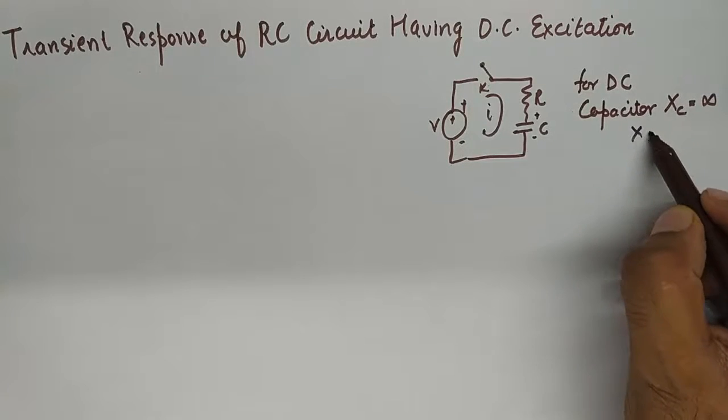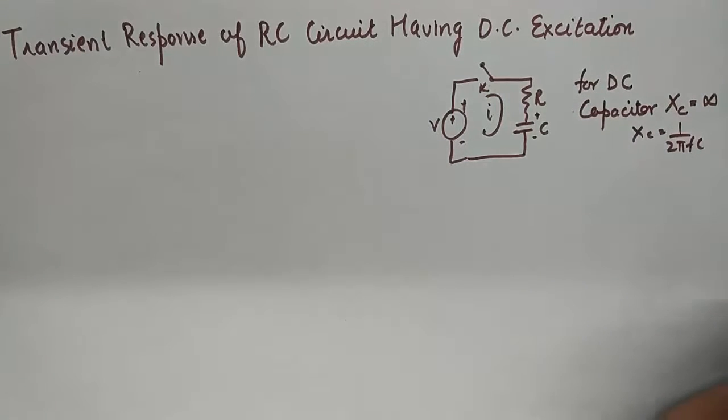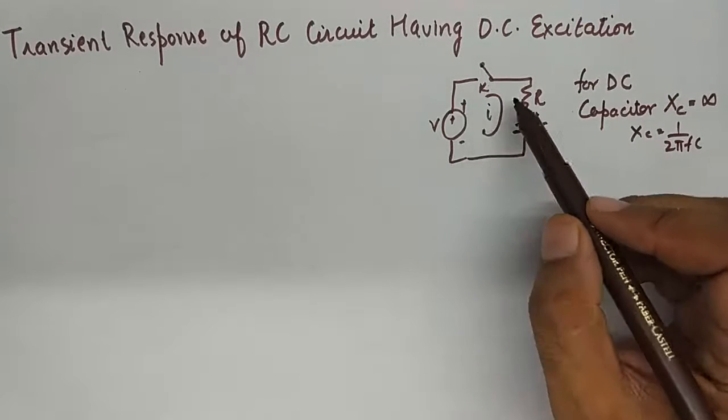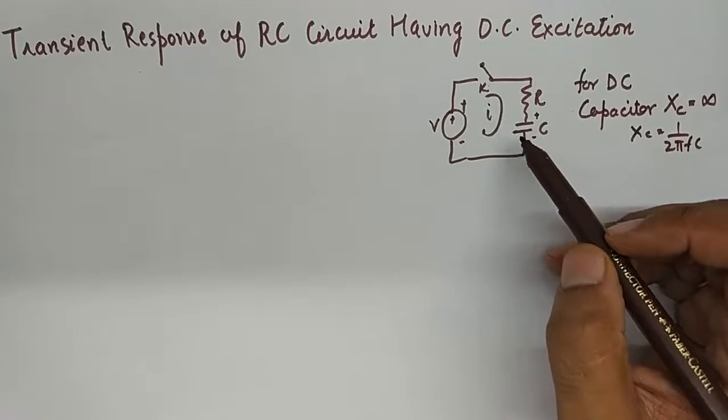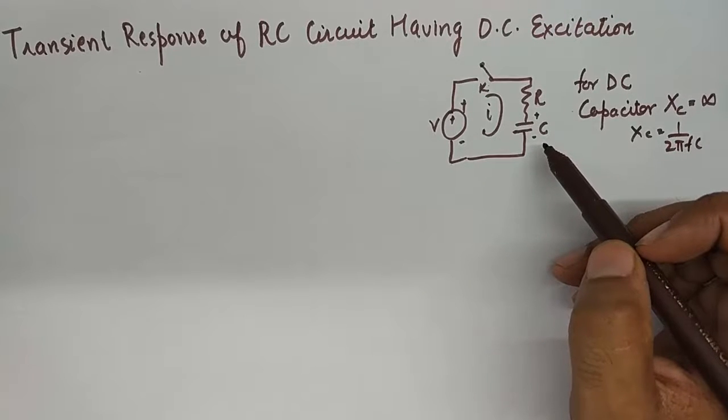So XC will be infinite for a capacitor because XC is 1 by 2πFC and when F for DC is 0 it is going to offer infinite reactance and no current will flow in the circuit once the capacitor starts to function in its full form.